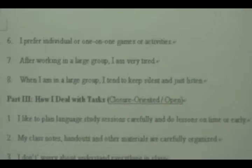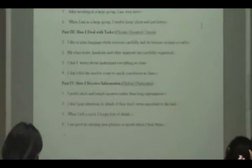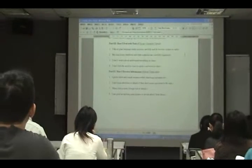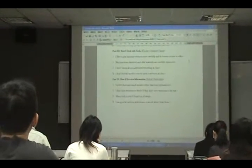The four parts of the learning style survey are: the first, how I use my physical senses; the second, how I expose myself to learning situations; the third, how I deal with tasks; and the fourth, how I receive information.